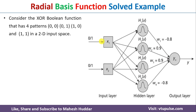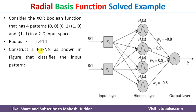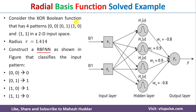In this case, I will be considering the XOR Boolean function to understand the radial basis function. The XOR Boolean function contains four patterns: 00, 01, 10, and 11. The radius is given to us, that is R is equal to 1.414. We need to construct the radial basis function so that we can classify the XOR Boolean function correctly.